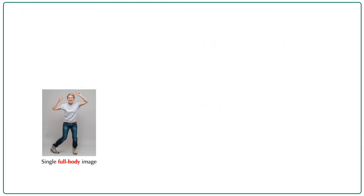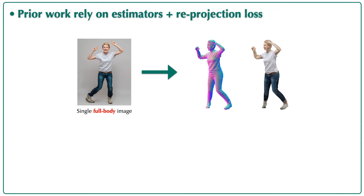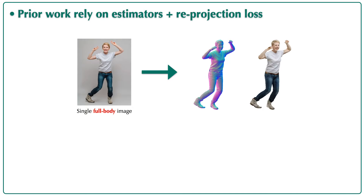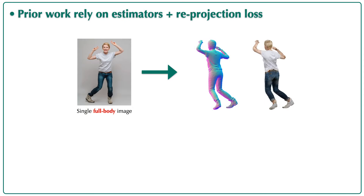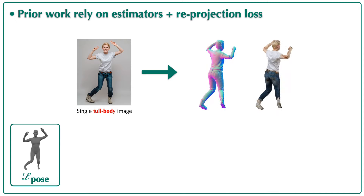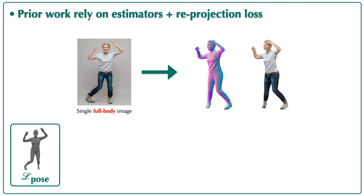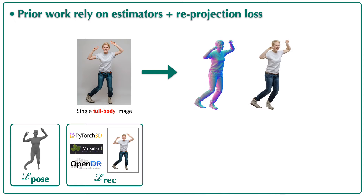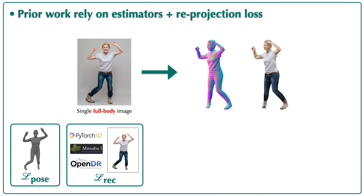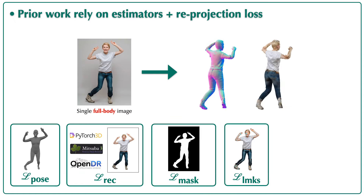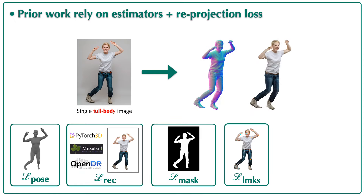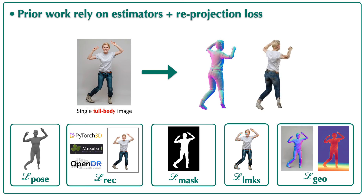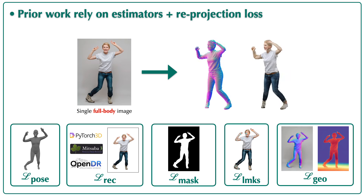Why do they fail on casual photos? Because those methods rely on off-the-shelf estimators for things like human poses. Meanwhile, they use multiple reprojection losses, including pixel-aligned reconstruction loss, mask loss, landmarks loss, normal loss, and depth loss. All these estimators and losses can only work for highly structured data.